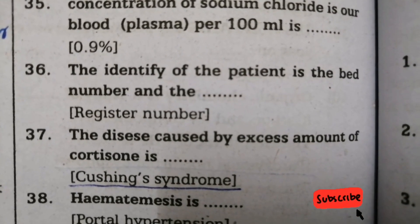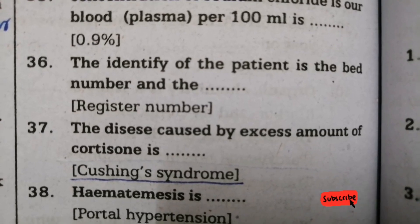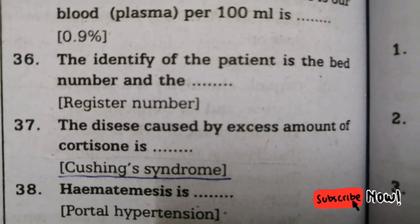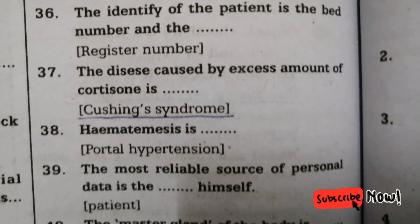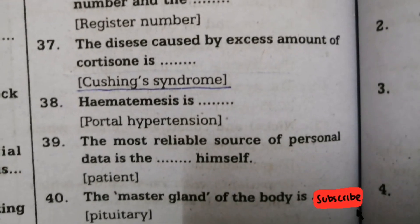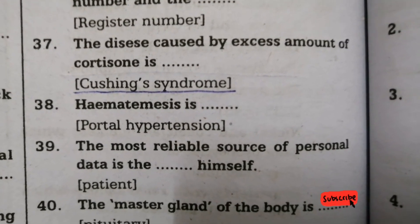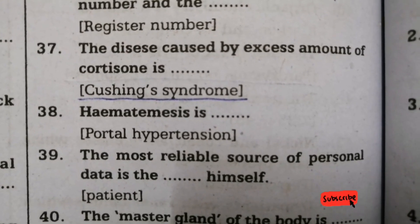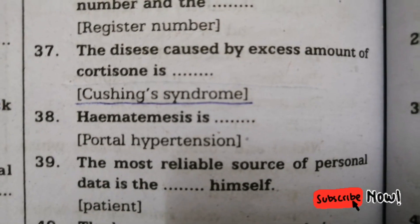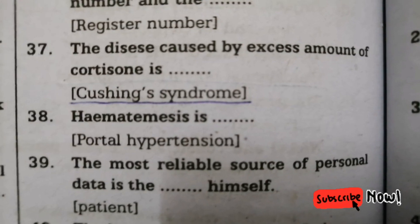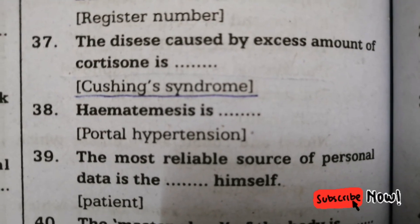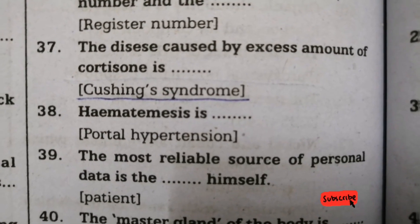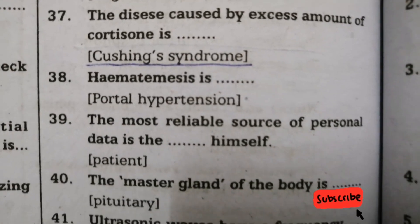Thirty-seventh question: the disease caused by excess amount of cortisone is called — right answer is Cushing's syndrome. Next question: hematemesis — right answer is it happens because of portal hypertension. Thirty-ninth question: the most reliable source of personal data is the patient himself.